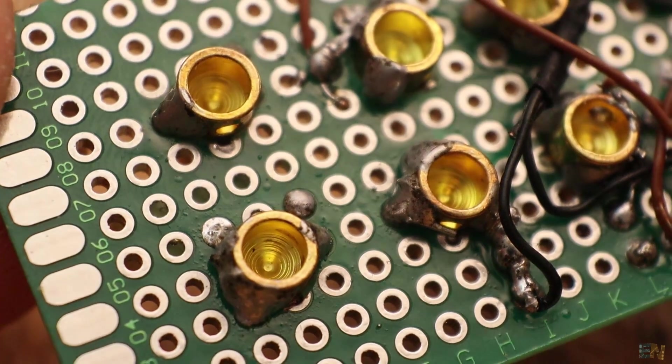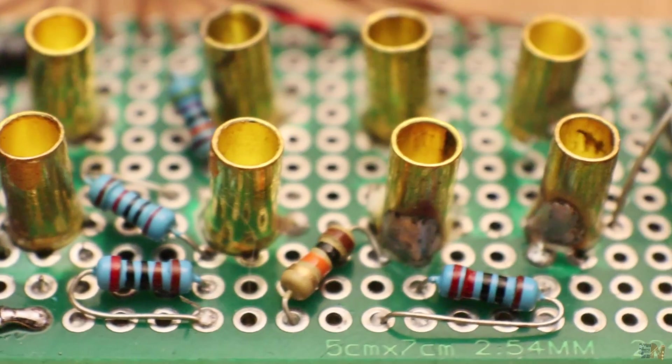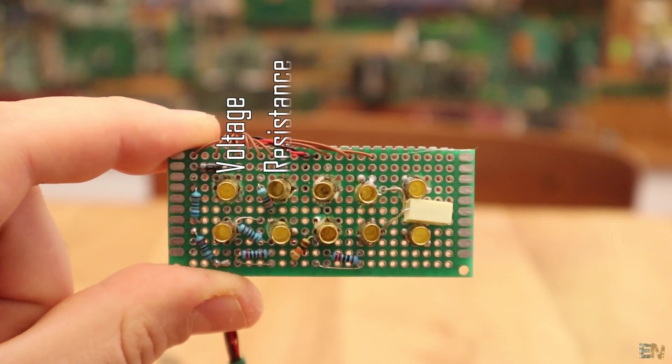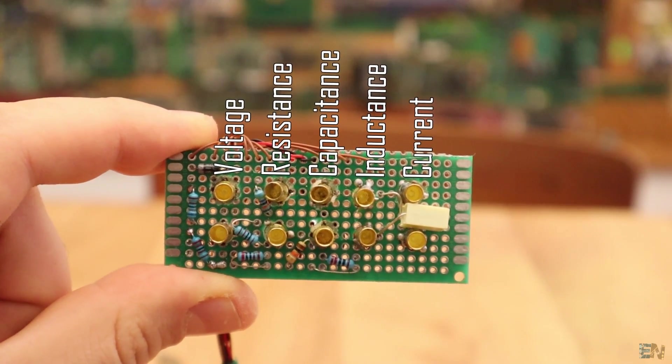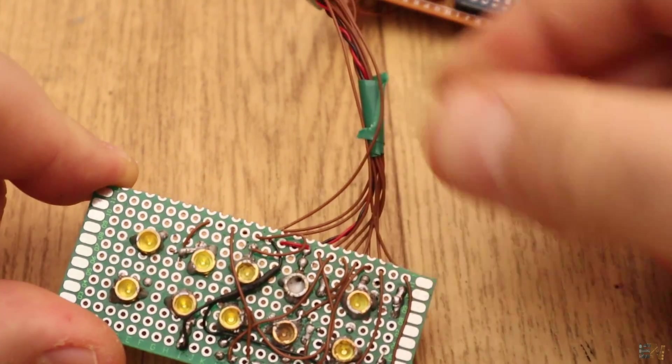Now I put those female connectors and solder them to the PCB, but I also solder the resistors and capacitors as we can see in the schematic, knowing that the first pair is the voltage read, then we have the resistance, the capacitance, the inductance and the current. I solder thin wires from this PCB that will go to the second PCB.